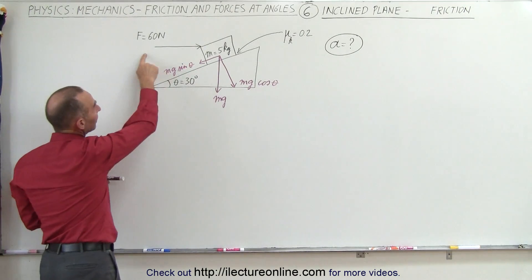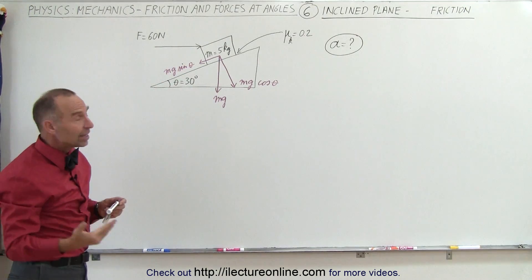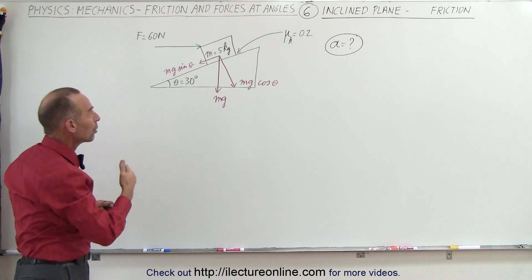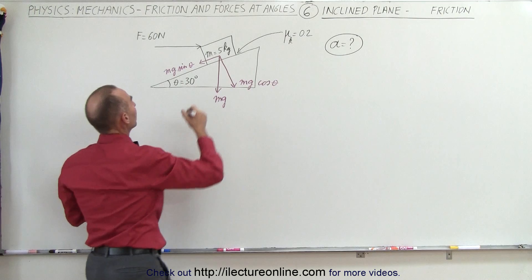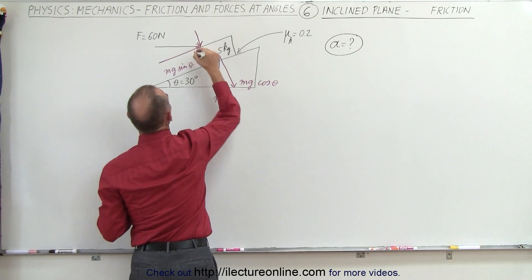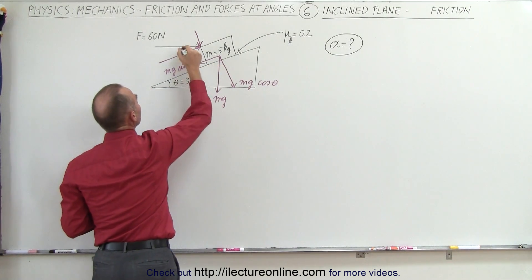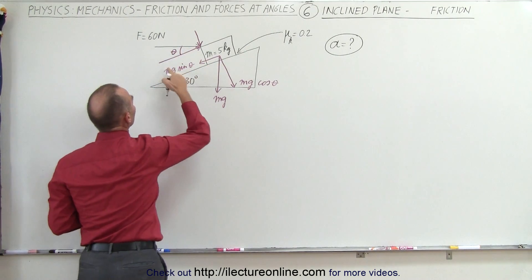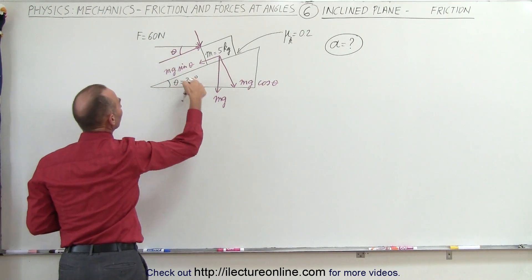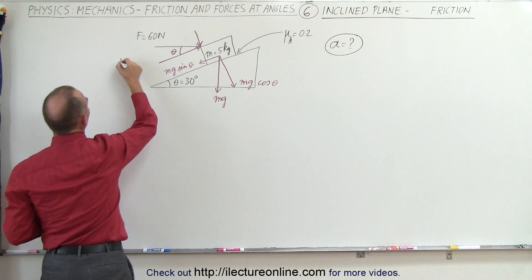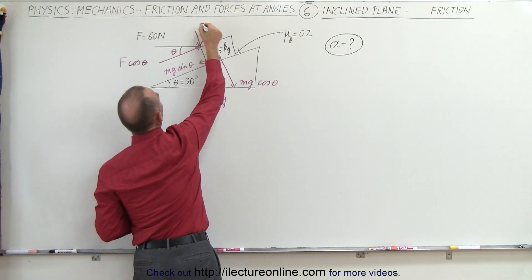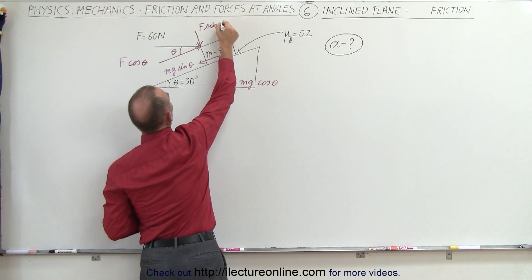We also have the force acting on the block, and to make things easier, we're going to find the perpendicular and parallel components to the incline as well. So here we have a perpendicular component to the incline and a parallel component to the incline. This angle theta here is the same as this angle theta here, so this component is going to be f times the cosine of theta, and this here will be f times the sine of theta.